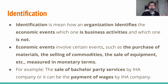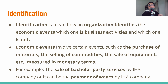Identification is the first phrase of accounting activities. We understand shortly that identification is how an organization identifies the economic events. You can question: how do we define which events are economic events and which are not? Economic events include all events like the purchase of materials, sales of goods, acquisition of machinery, etc., which are measured in monetary terms. For example, the sale of bachelor party services by IHA company is an economic event because it is measured in monetary terms — a person has to pay for those services.